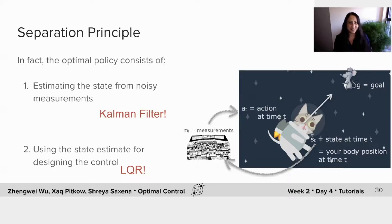And of course, as you may have guessed, you have seen both these things before. The Kalman filter is exactly what we can use for estimating the state from noisy measurements.